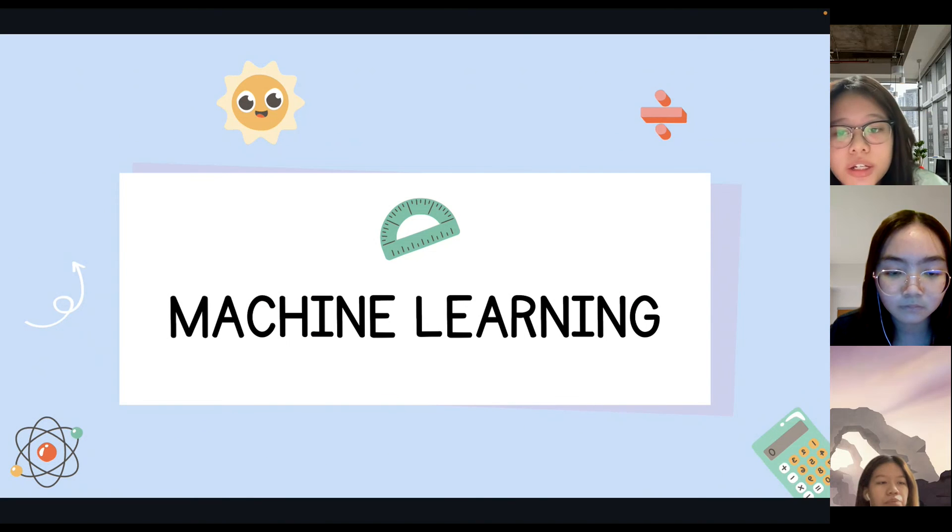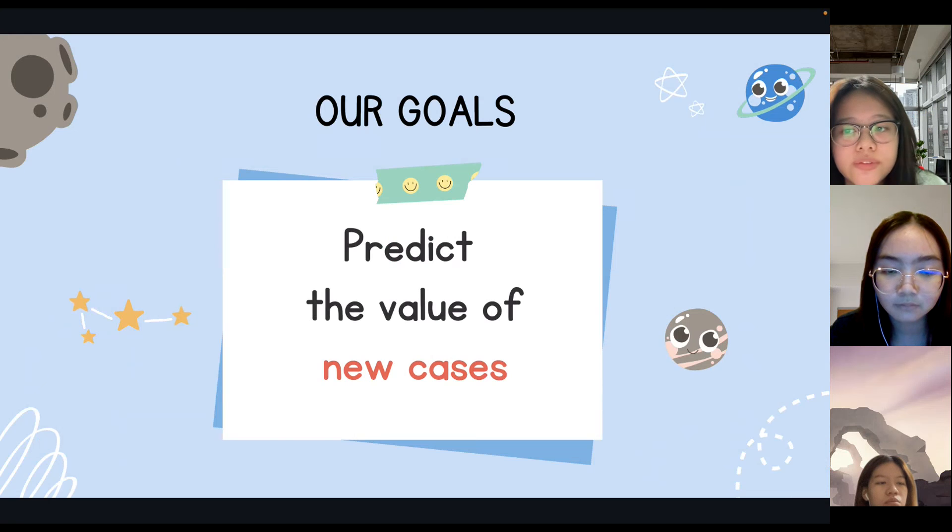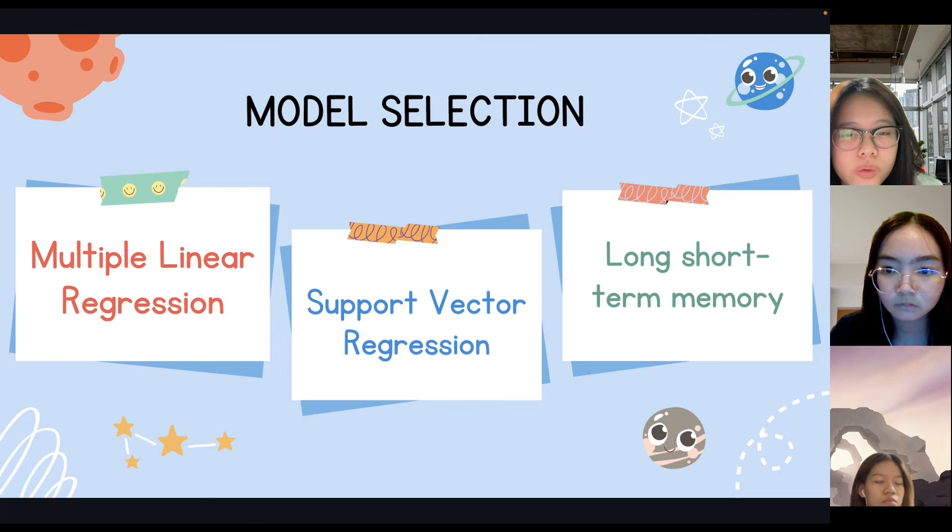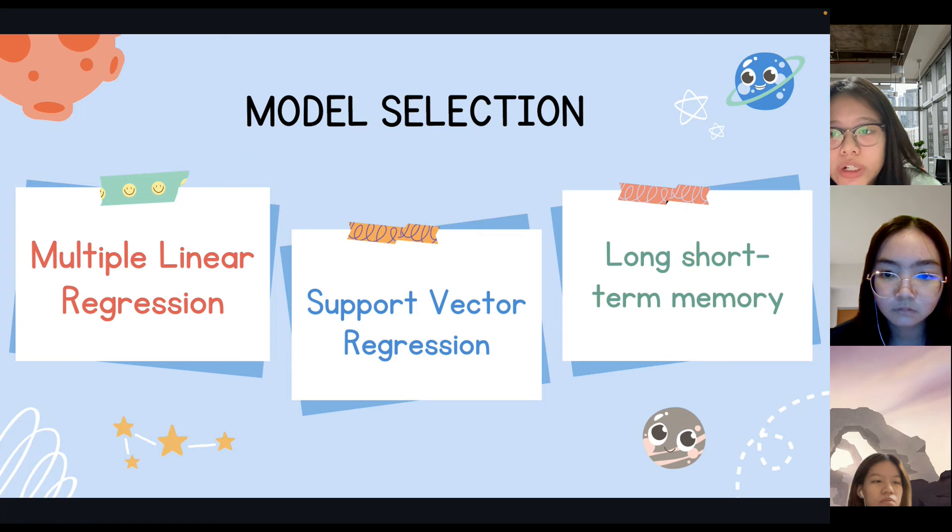The next part is machine learning. The goal that we set from what we have done is to predict the new cases that could happen in the future. We will get the insight from three machine learning models that we have selected for predicting new cases in Thailand, which are multiple linear regression, support vector regression, and a long short-term memory model. Then we will select the best model by the performance evaluation derived from mean squared error and R-squared.